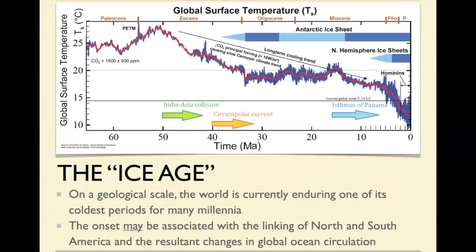A little bit about the ice age. Over the last 50 million years, we have been getting gradually colder and colder. From about 50 million years ago, in the beginning of the Eocene, average global temperatures were considerably warmer than they are now. This is the time of the London climate. In that period of time, things have got a lot colder.